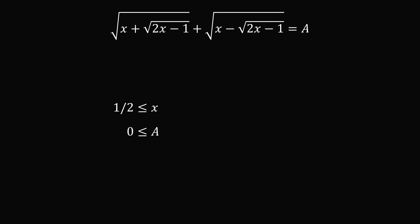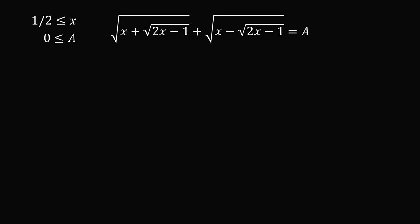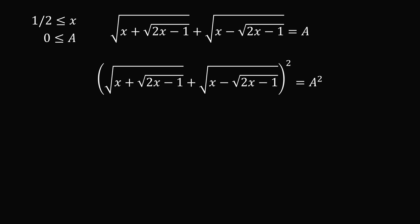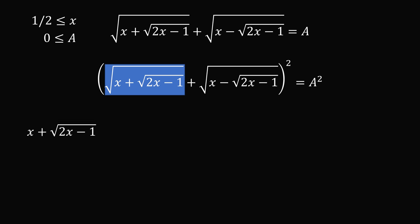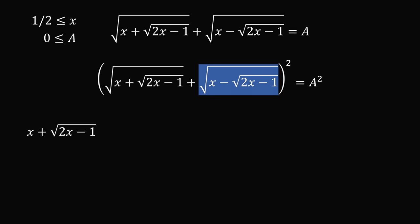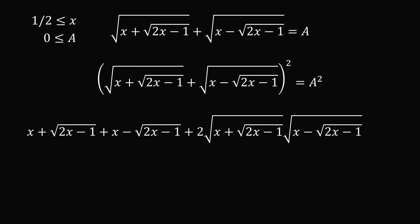Furthermore, we have the square root of something plus the square root of something equal to a. We know that each of these square roots is a non-negative number, and adding two non-negative numbers means a is going to be a non-negative number, so a is greater than or equal to 0. Now, to eliminate the square roots, let's square both sides of the equation. We get the square of the first square root, plus the square of the second square root, plus two times the product of the square roots, all equal to a squared.